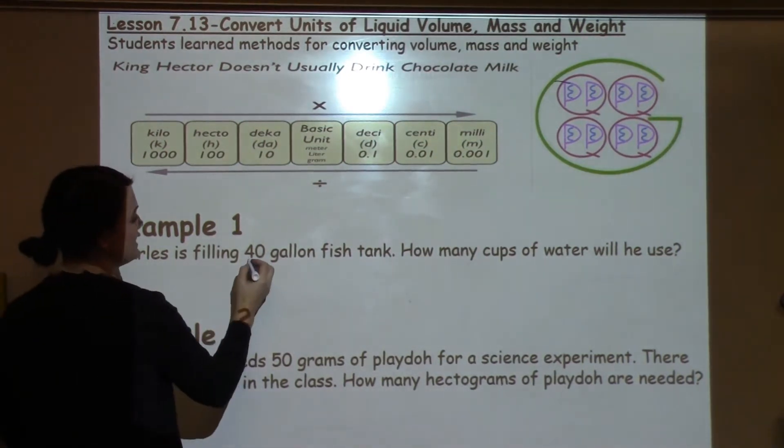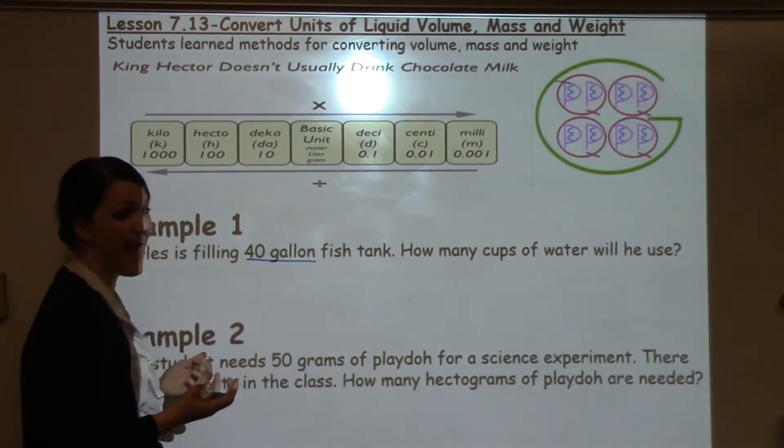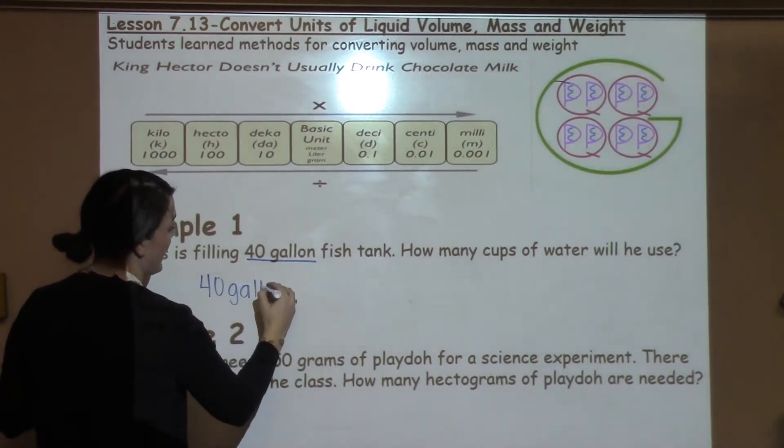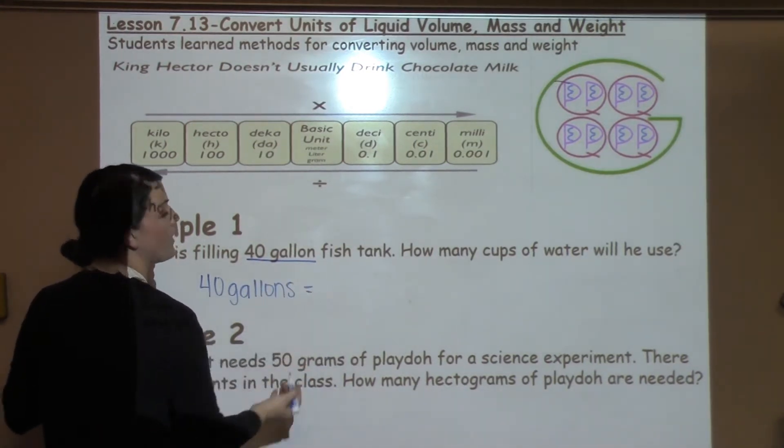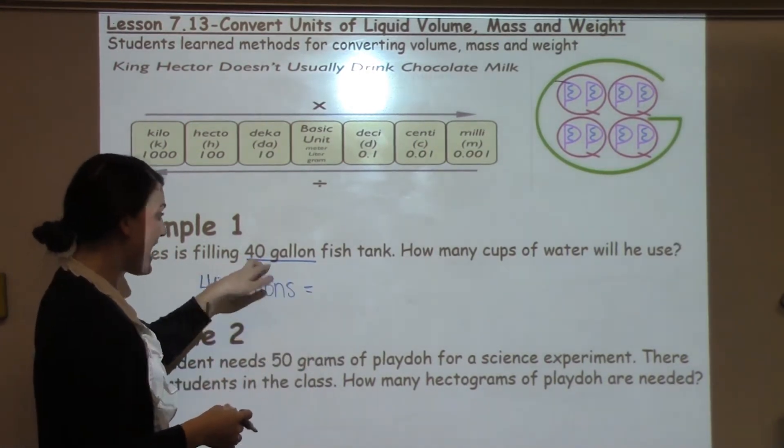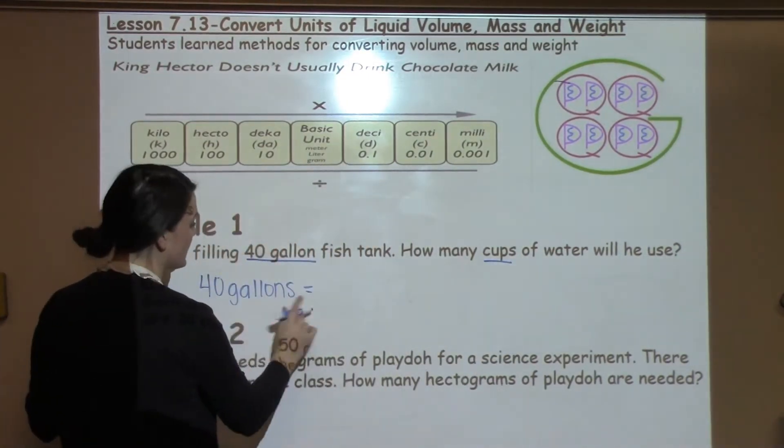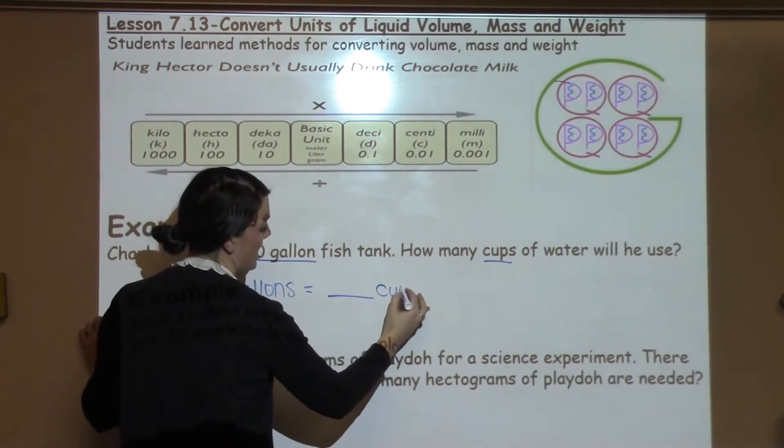I want first to notice what I have. I have 40 gallons. And then I want to focus on what do I want to know. I want to know how many cups will that be. So 40 gallons is equal to how many cups.